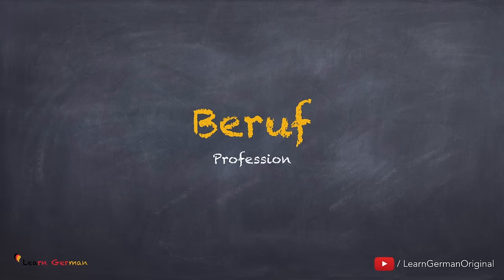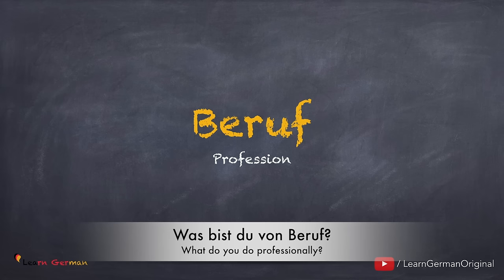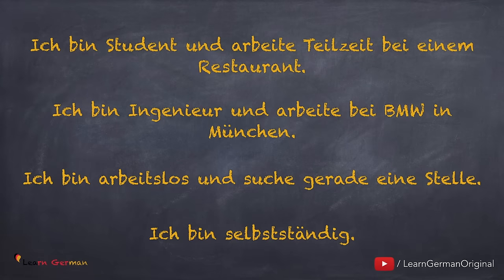Das nächste ist Beruf. Was bist du von Beruf? Wo arbeitest du? Ich bin Student und arbeite Teilzeit bei einem Restaurant. In Deutschland darfst du als Student nur Teilzeit arbeiten. Oder du kannst sagen: ich bin Ingenieur und arbeite bei BMW in München. Wenn du gar nicht arbeitest, kannst du sagen: ich bin arbeitslos und suche gerade eine Stelle. Und wenn du eigener Chef bist, dann sagst du: ich bin selbstständig. Du kannst hier über deinen Beruf sprechen.